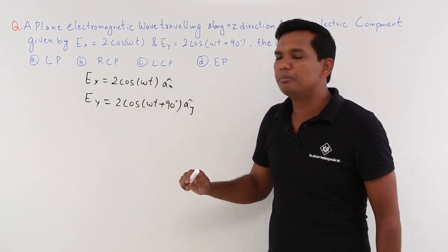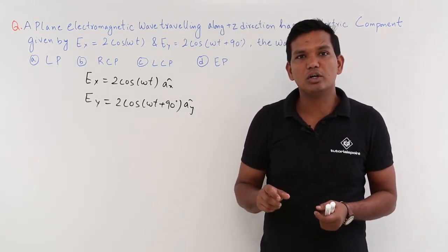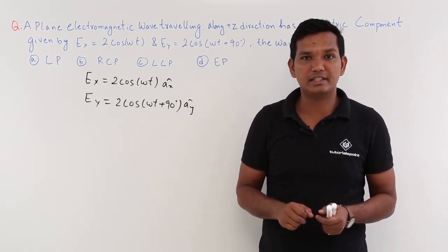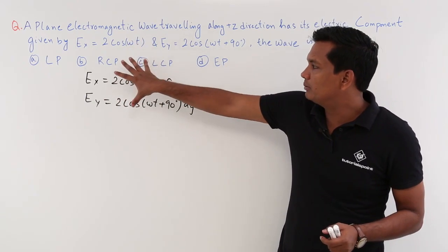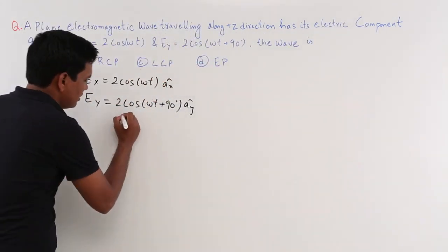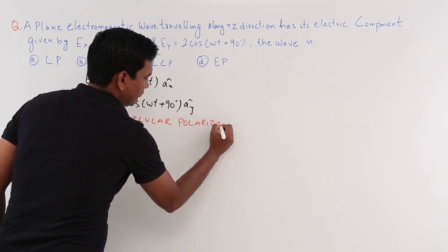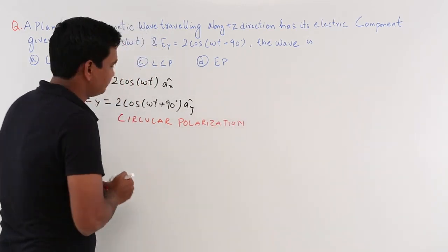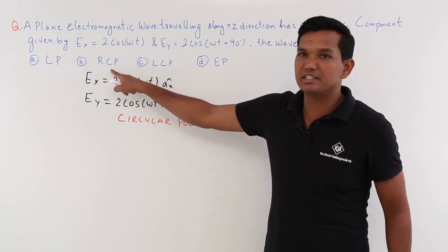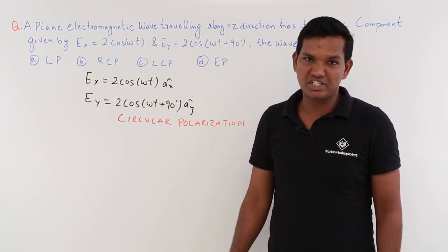The phase difference between Ex and Ey is 90 degrees. When the magnitudes are equal for both components and the phase difference is 90 degrees, it is very clear that this is circular polarization. The next part is to determine whether it is right circular polarization or left circular polarization.